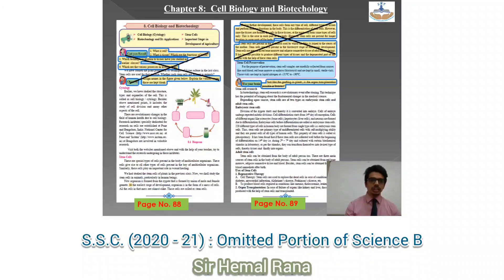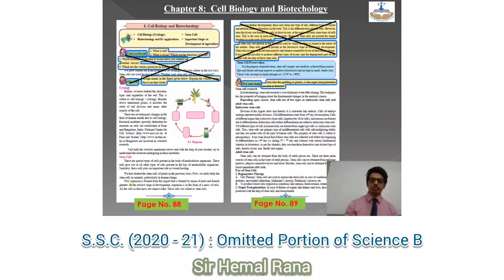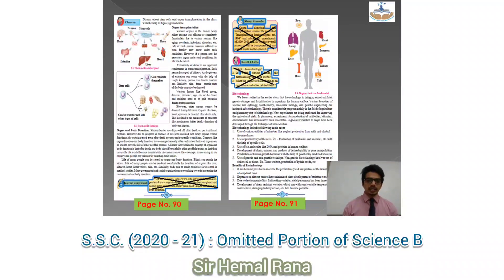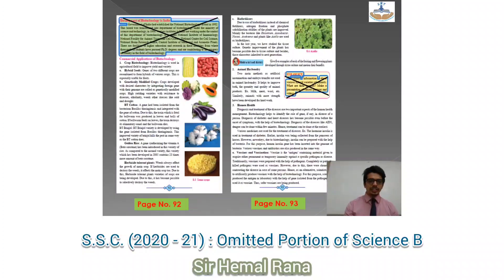Coming to Chapter 8, Cell Biology and Biotechnology: the initial 'Can You Recall' and 'Observe' have been removed. On page 89, the first two paragraphs have been removed and 'Use Your Brain Power' has also been removed. On page 90, 'Internet My Friend' has been removed. On page 91, 'Always Remember' and 'Recall a Little' have been removed. On page 92, the first green box has been removed, and on page 93, 'Use of ICT' has been removed.